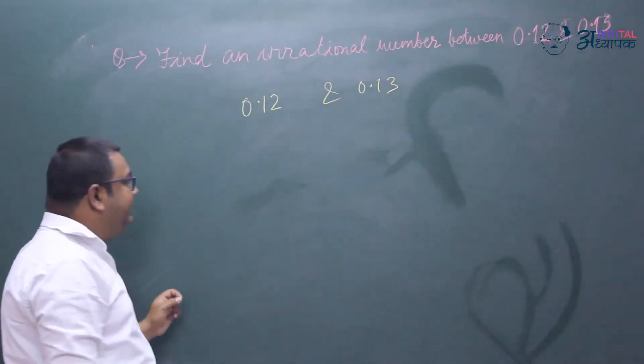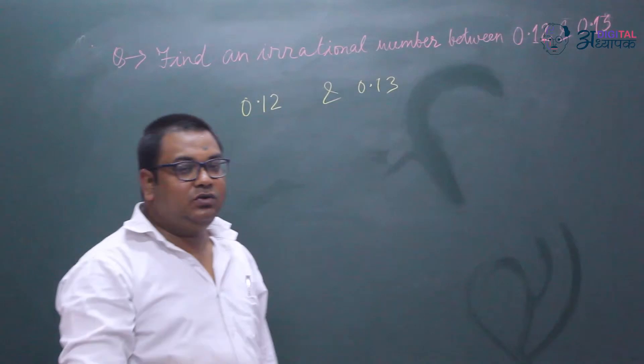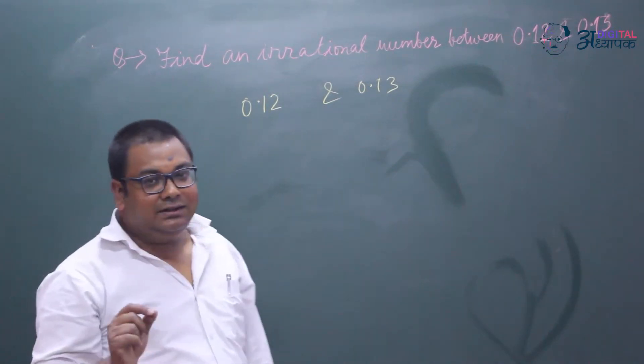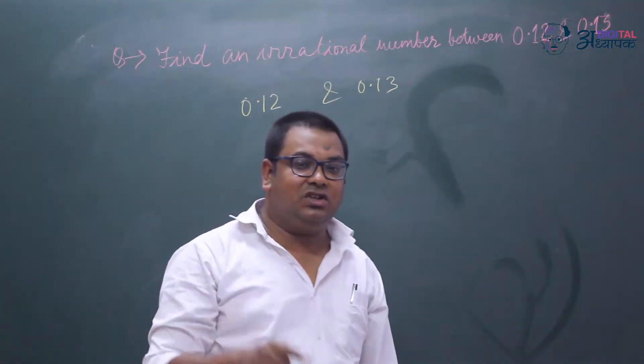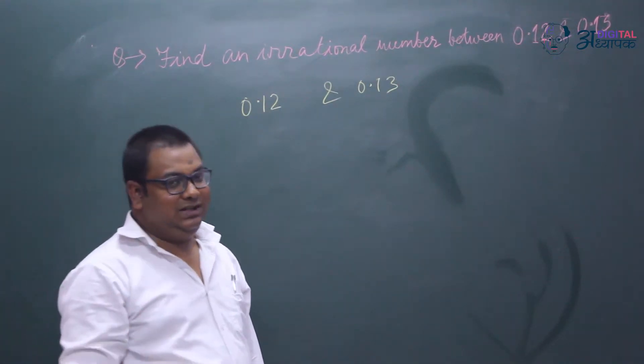But we don't need to find rational numbers. We need to find irrational numbers between these two given rational numbers. Now students, you must be knowing that the decimal expansion of an irrational number is a non-terminating, non-repeating decimal.